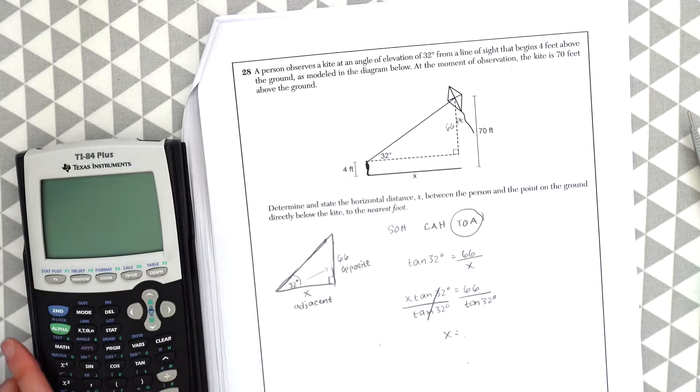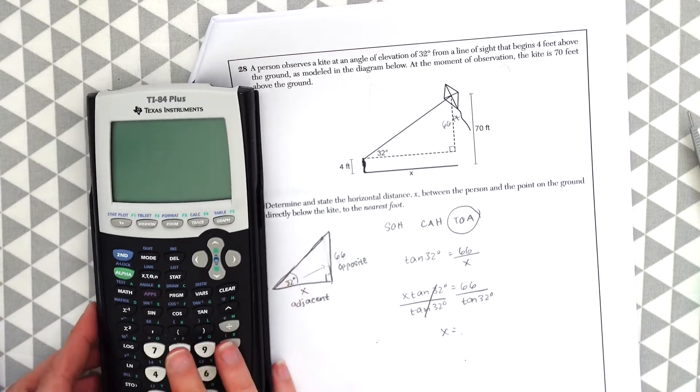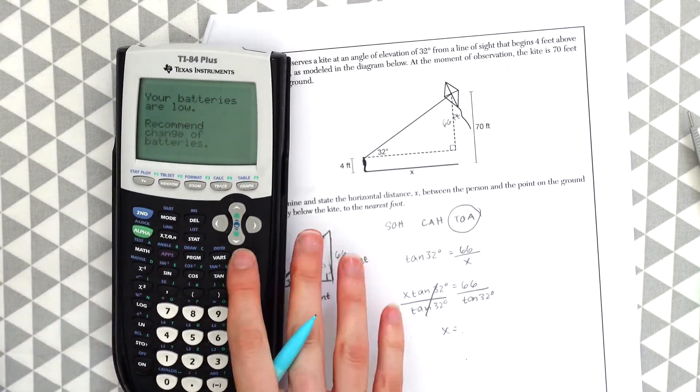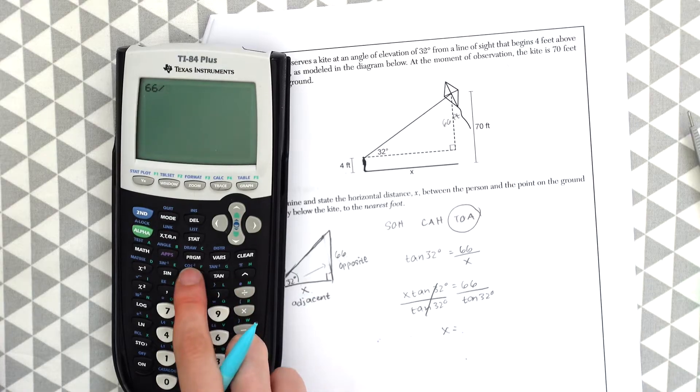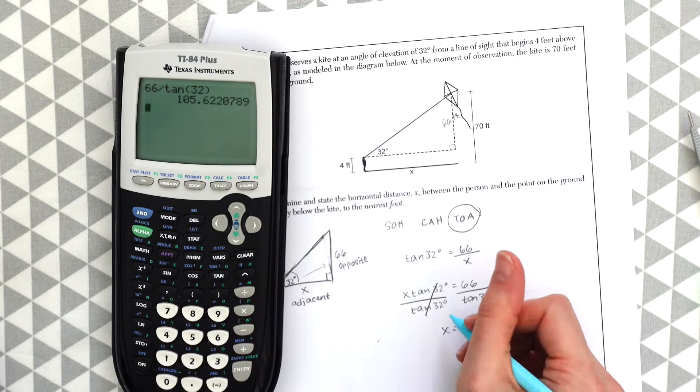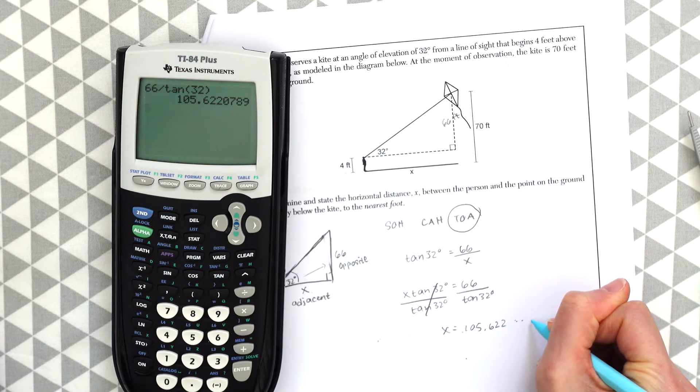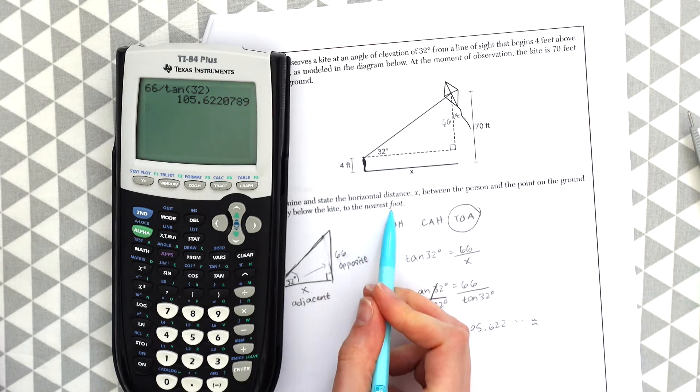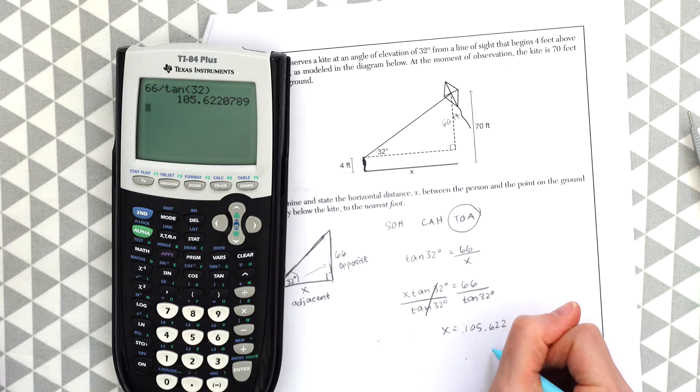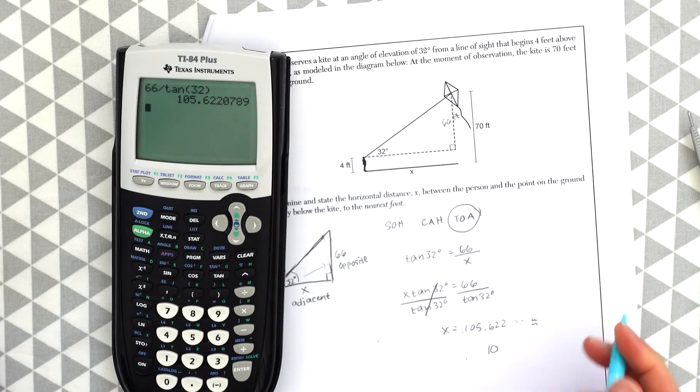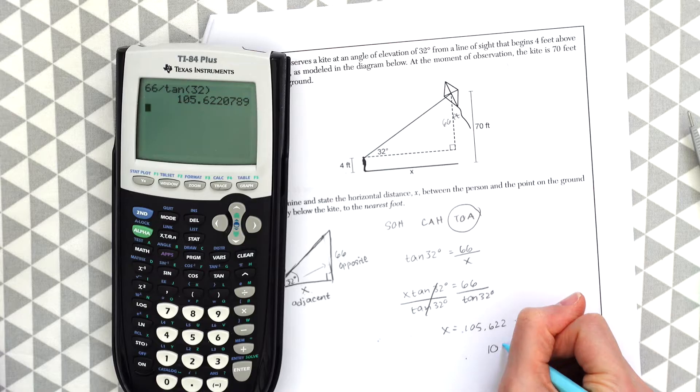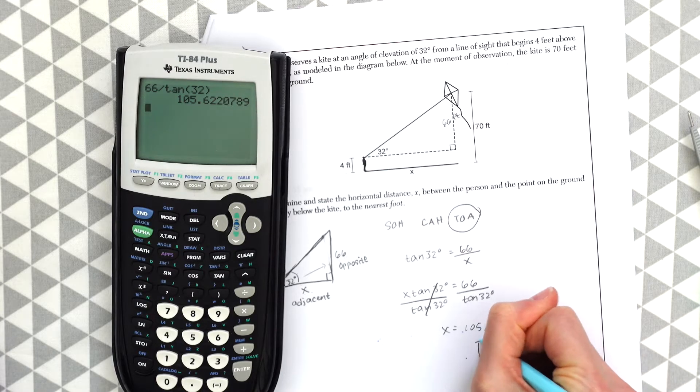So opposite and adjacent, we know we're going to be using tan. So we have tan of 32 degrees is equal to opposite over adjacent, which is 66 over x. And then at this point, we've got to use our calculator. So let's plug this in. And we get this value 105.622. And if you look back, they're asking for the value to the nearest foot. So we just want to round, we're going to be rounding up in this case, we get 106 feet as our answer.